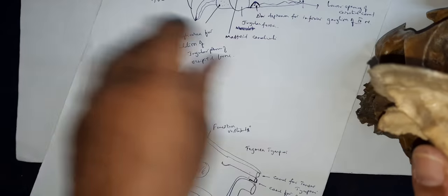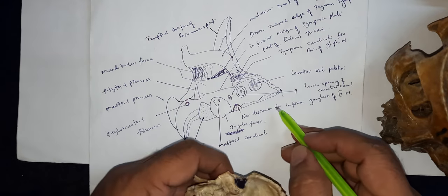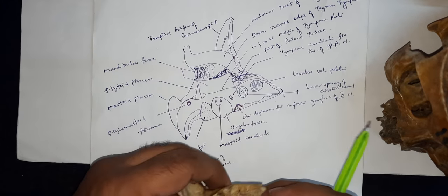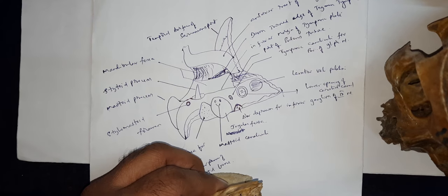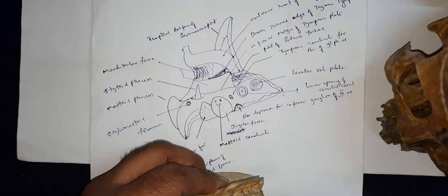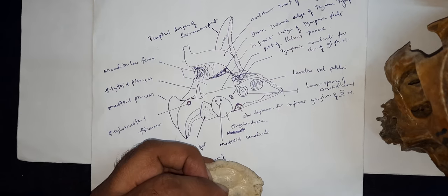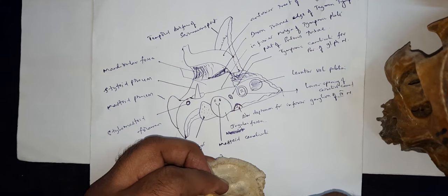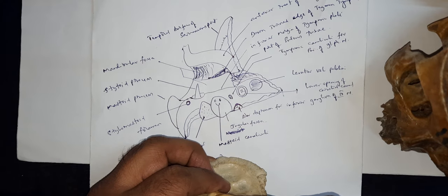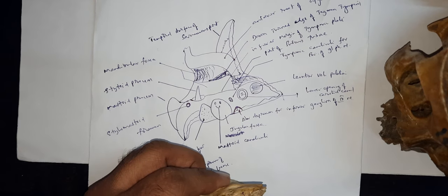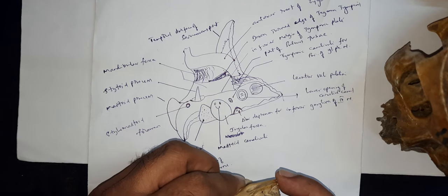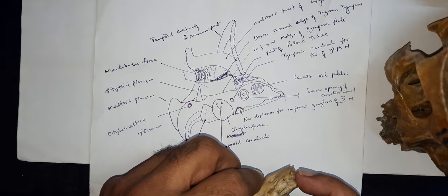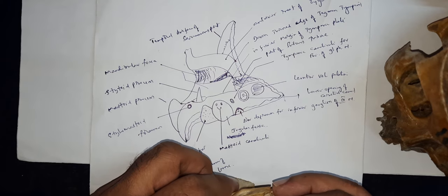If we see the inferior surface, this is represented like this. You can see here a triangular area — this part gives attachment to the levator veli palatini muscle, which is a muscle of the soft palate. This muscle also extends onto the auditory tube. Then comes the carotid canal — the lower opening of the carotid canal. In front of that, a small opening is there — that is for the tympanic canaliculus, which is for the tympanic branch of the glossopharyngeal nerve.